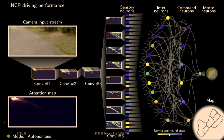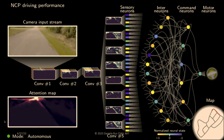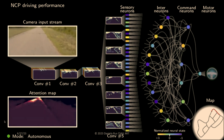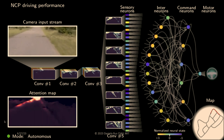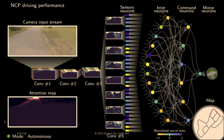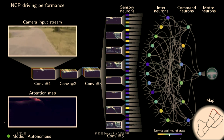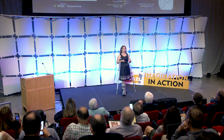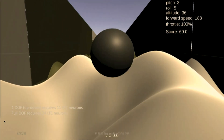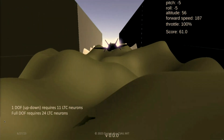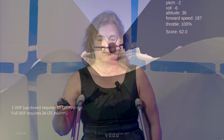Liquid networks seem to understand their task better than deep networks. And because they are so compact, they have many other properties. In particular, we can take the output of 19 neurons and turn them into a decision tree that could show humans how these networks decide. We can apply liquid networks to many other applications — here is a solution consisting of 11 neurons driving a plane in a canyon of unknown geometry, where the plane has to hit points at unknown locations.